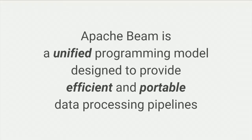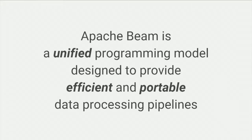If I were to summarize Apache Beam, I usually use this sentence, which captures the vision of the project: Apache Beam is a unified programming model designed to provide efficient and portable data processing pipelines. These three things are key — unified, efficient, and portable. Unified means we can cover a broad range of use cases from batch to streaming in one single unified API. Efficient means it runs really fast. And portable means it can run anywhere. In today's talk, I'm going to focus on two of them: unified and portable.